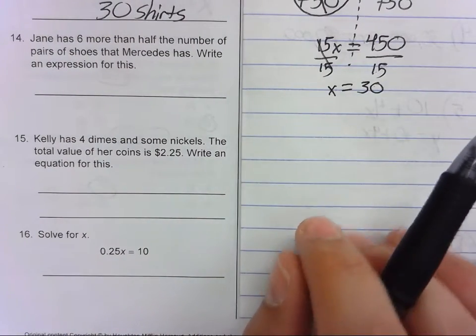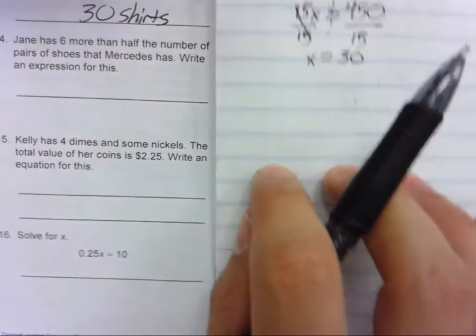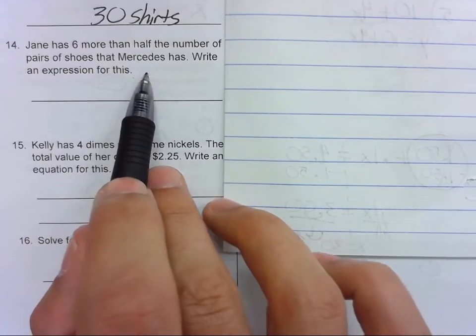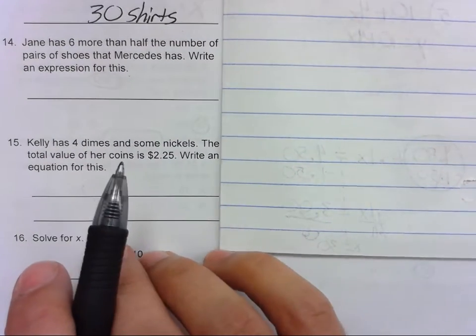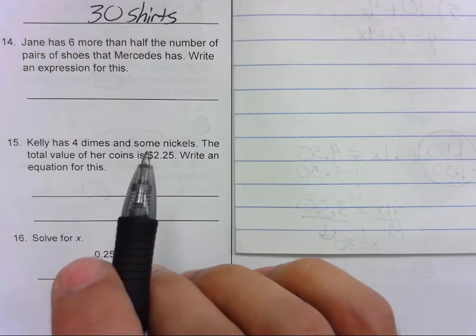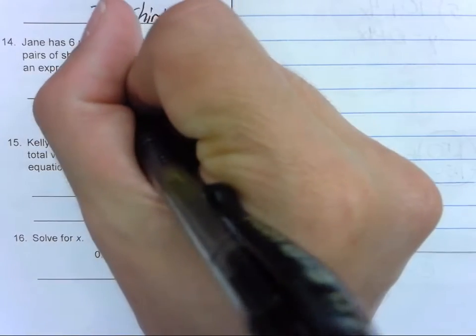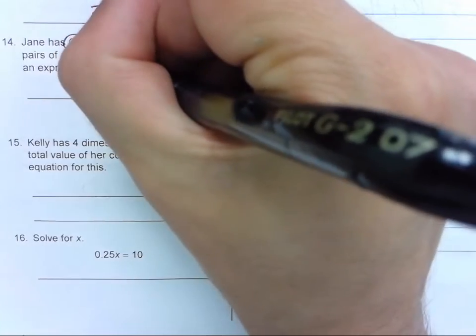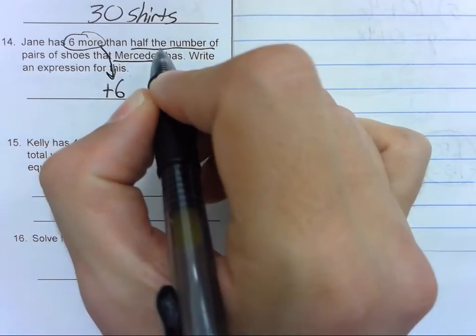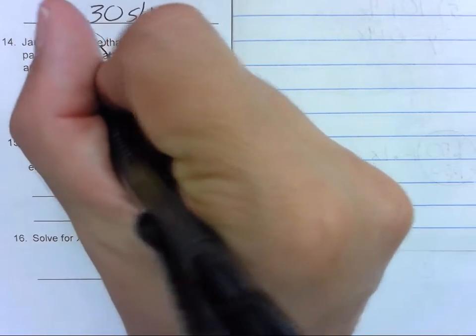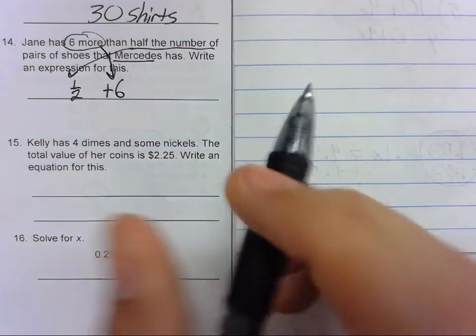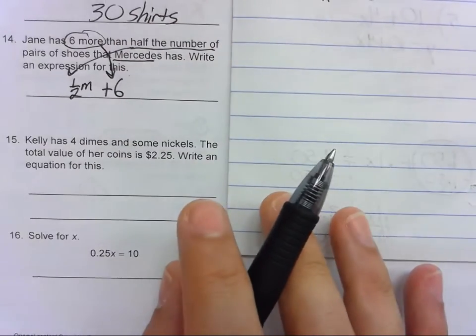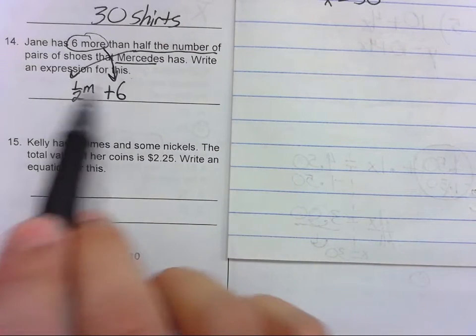Jane has six more than half the number of pairs of shoes that Mercedes has. Write an expression for this. This is not telling us to solve. We're just writing the expression. Six more than half the shoes that Mercedes has. So six more—you're having a number and you're adding six. Half the number that Mercedes has. So half of the number that Mercedes has—m for Mercedes, or you could have put an x. So half of whatever Mercedes has, Jane has six more. So there's the expression.